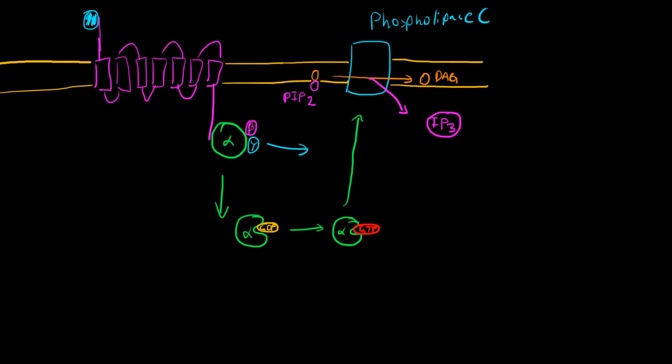So diacylglycerol actually, in itself, is a signaling molecule. This guy can go and activate another really general type of kinase called protein kinase C, which is another very general type of kinase. So upon activation of protein kinase C, it can go phosphorylate a ton of different things, elicit a bunch of different pathways, and you get a very diverse response.